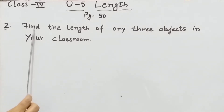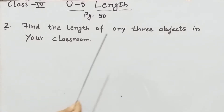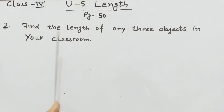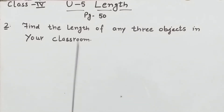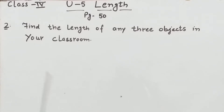Next, question 2 is: find the length of any three objects in your classroom. इसमें आपने कोई भी three objects लेने हैं अपनी classroom के और उसकी length को measure करना है। जैसे कि हम classroom में नहीं हैं, तो हम अपने room के ही किसी three objects की length को measure कर लेंगे। अपने room में ऐसे objects लेने हैं जिनकी length को आप easily measure कर सकते हो।